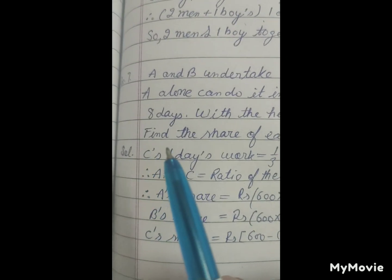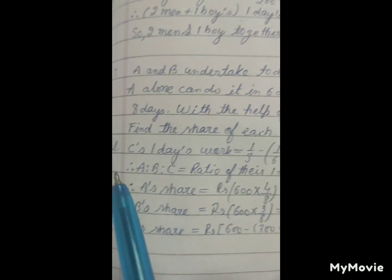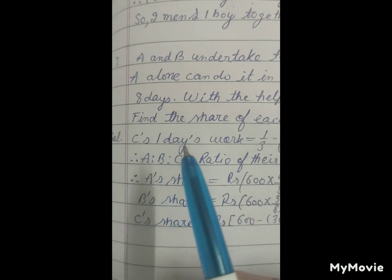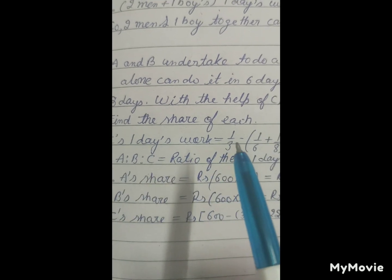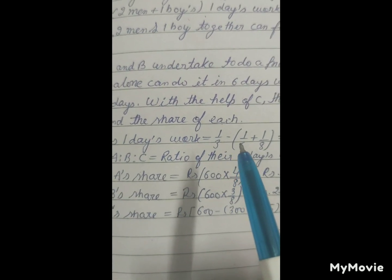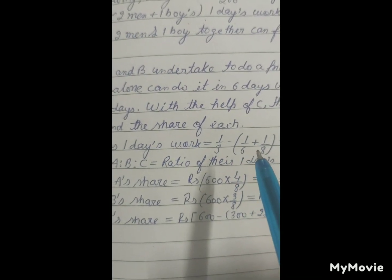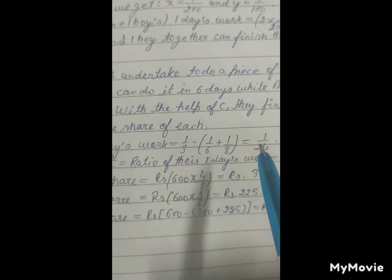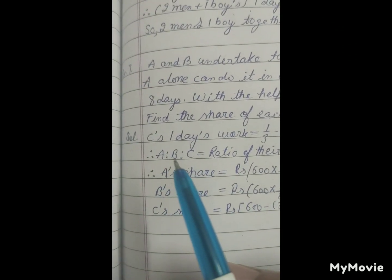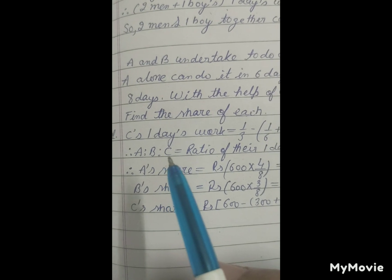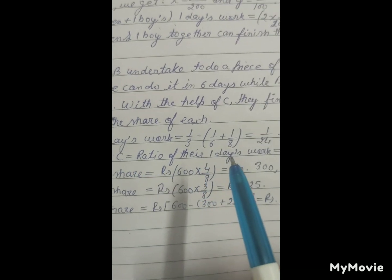in three days. Find the share of each. Solution: C's one day's work is 1 upon 3 minus 1 upon 6 plus 1 upon 8 equals to 1 upon 24. So A ratio B ratio C equals to ratio of